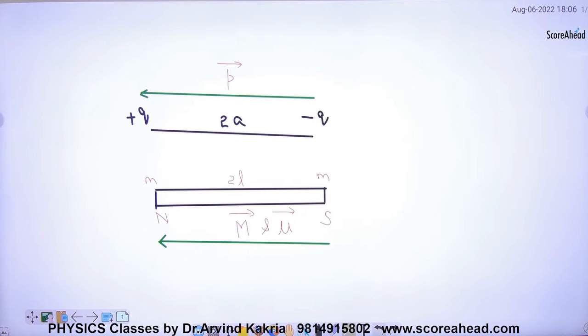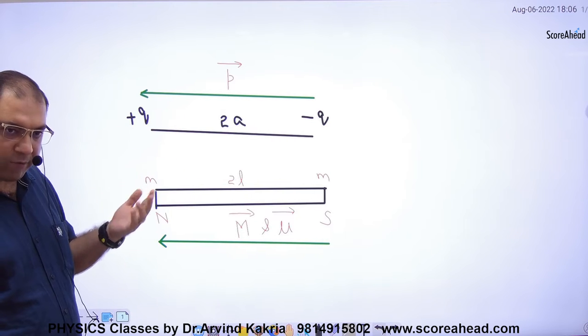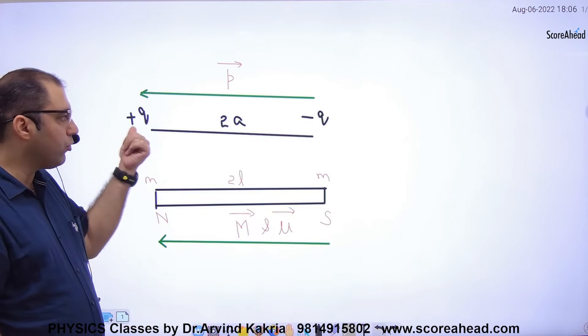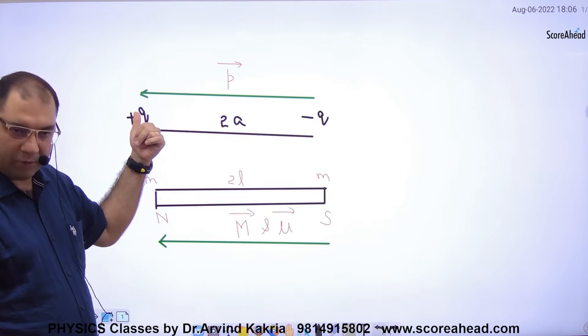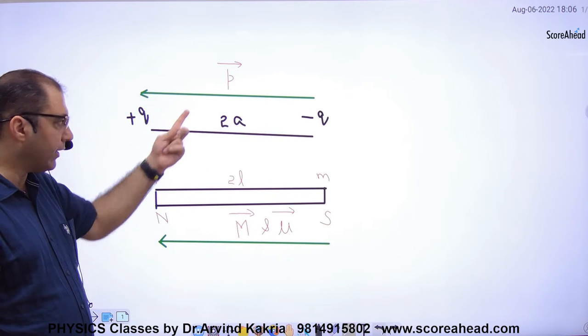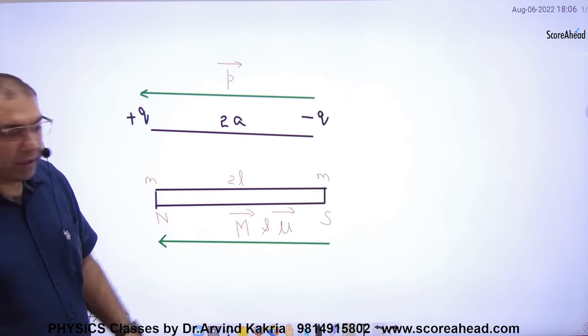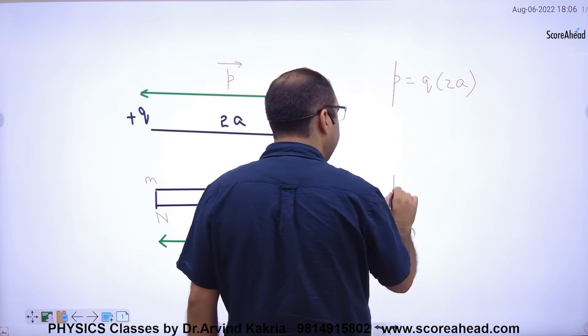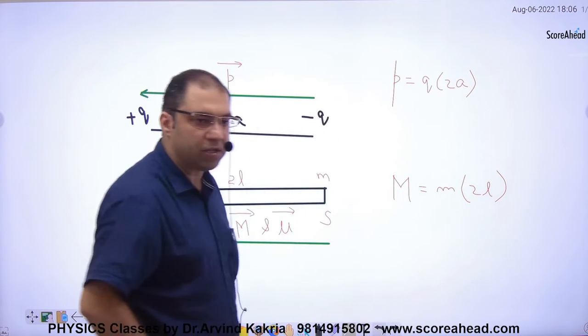So here, one dipole is plus Q minus Q separated by 2A, electric dipole. North and south separated by 2L is magnetic dipole. Q ki jagah small m, small m. Electric dipole moment negative se positive, magnetic dipole moment south se north. Symbol is P for electric dipole moment, capital M or mu for magnetic dipole moment. Electric dipole moment formula P is equal to q into 2A. Here capital M formula is small m, q ki jagah small m, or distance ki jagah 2L.